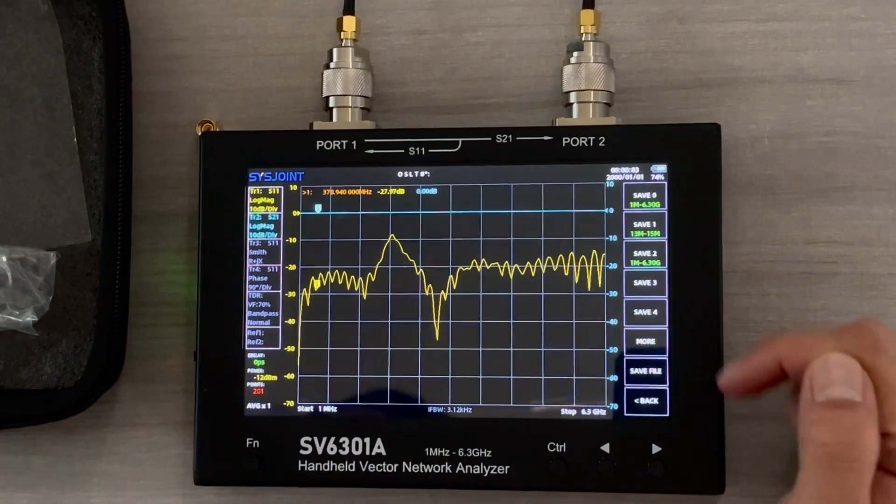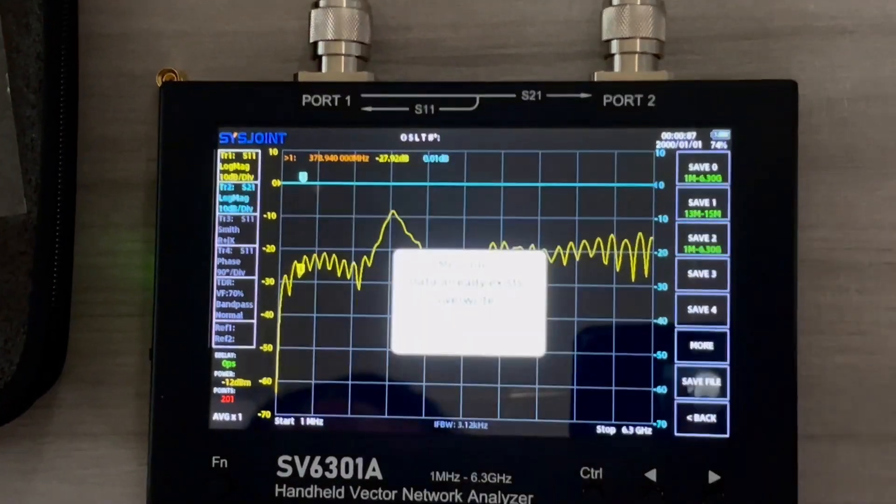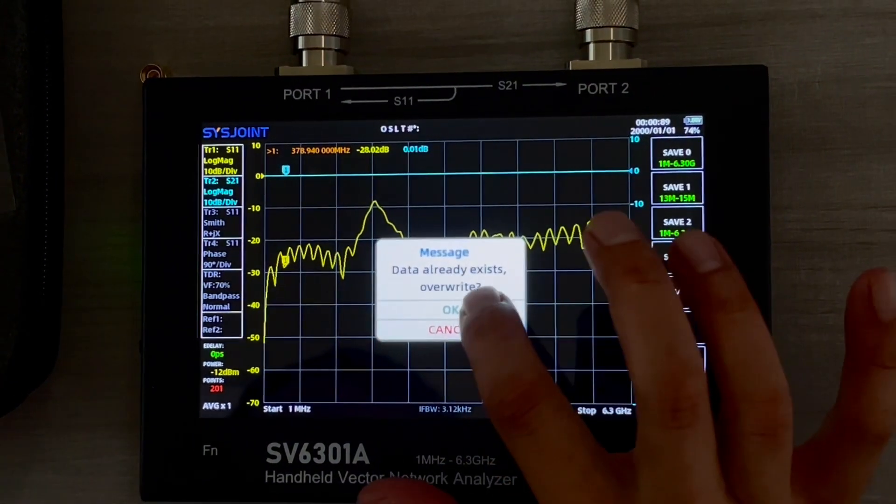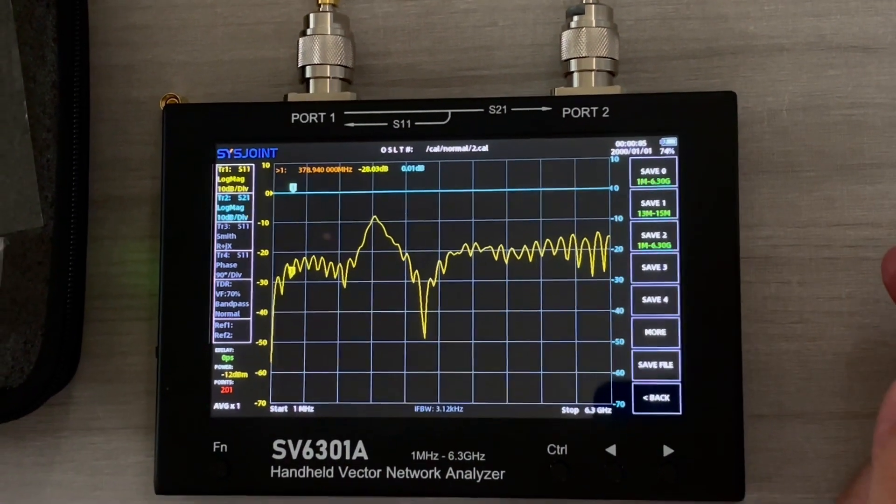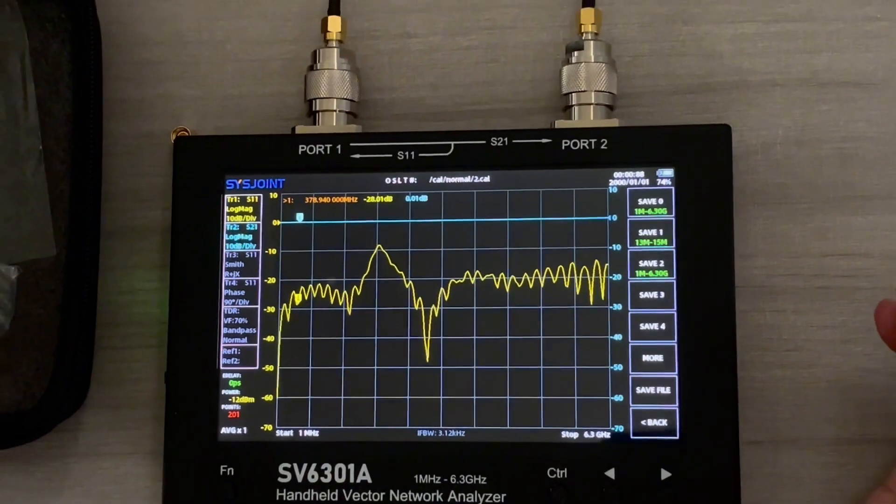And you want to save to one of the channels. I will go to channel 2 again and overwrite it. Then next time when you want to go to the same frequency band, you can simply recall the frequency band you have calibrated before.